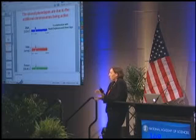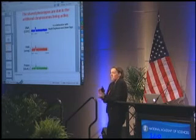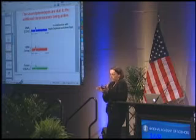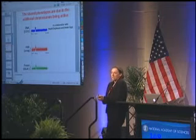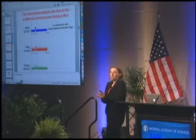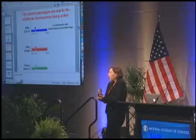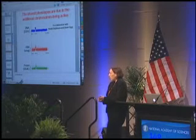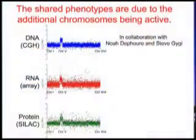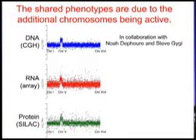To test this hypothesis, the first question we needed to answer was: are these additional chromosomes actually active in the strains we've created? This slide shows you that this is the case. I'm showing you a yeast strain that has an extra copy of chromosome 5, and I'm showing you the DNA content, the RNA content, and the protein content of these cells.